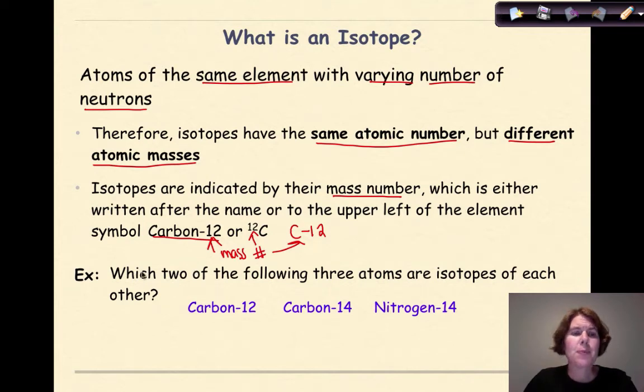Let's look at an example. Which two of the following three atoms are isotopes of each other? We can figure this out by looking at the number of protons and neutrons in each element. For Carbon-12, the number of protons is 6. Carbon-14, the number of protons is also 6. In Nitrogen-14, the number of protons is 7. Now let's look at the number of neutrons.